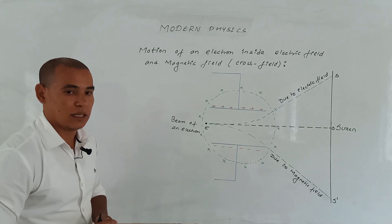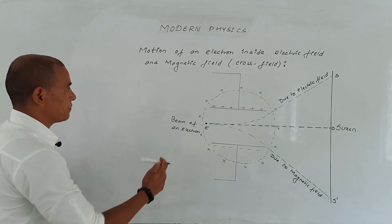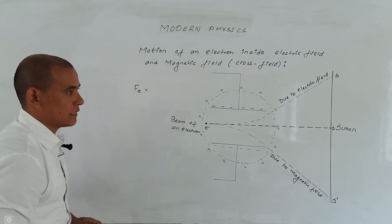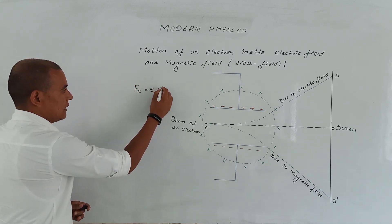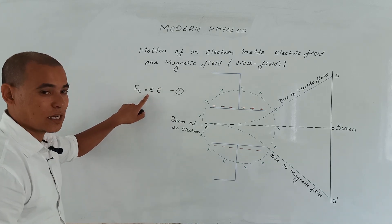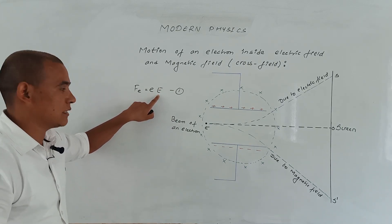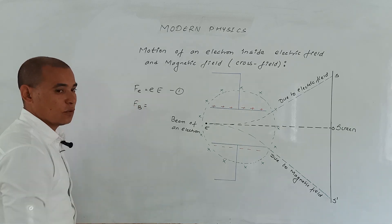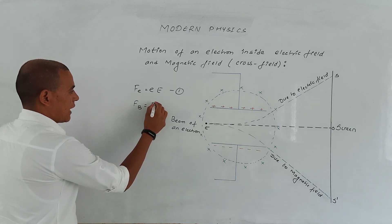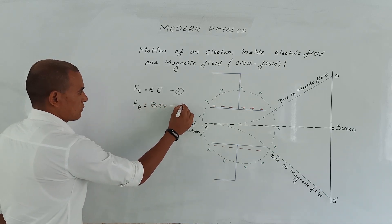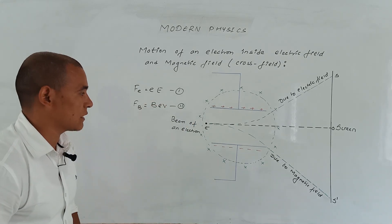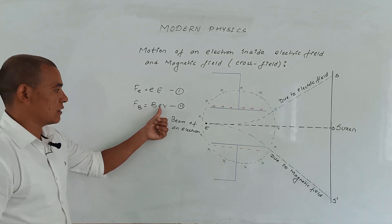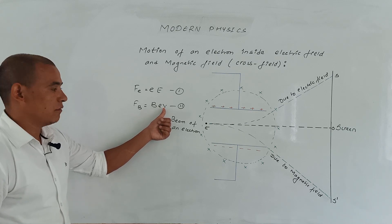Now let me explain this mathematically. The force due to the electric field is given as eE, where small e is the charge of the electron and capital E is the electric field intensity. The force due to the magnetic field is given as eBV, where B is the magnetic field, e is the charge of the electron, and V is the velocity.